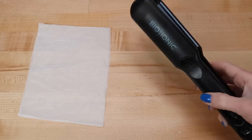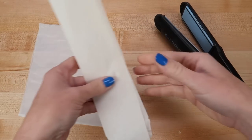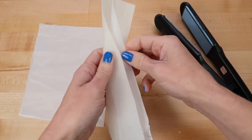To seal the sides of the trash bag, you will need a heat source and some parchment paper to protect the plastic.